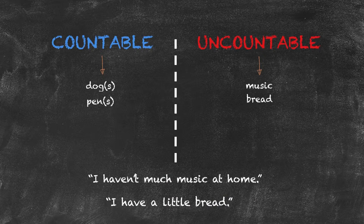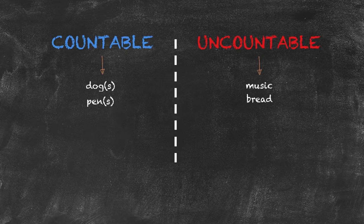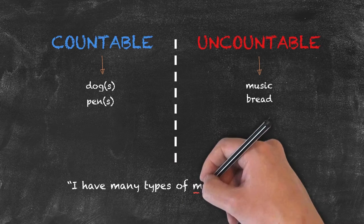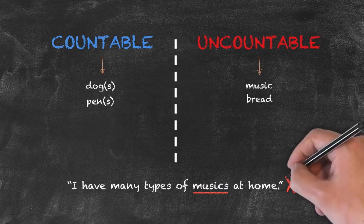Nouns are uncountable. We cannot normally pluralize them. For example, I cannot say, I have many types of musics at home.